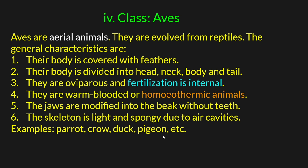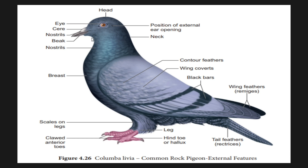An example of Aves is the pigeon, whose scientific name is Columba livia. The body is covered with feathers and it has claws. The external features of the pigeon represent the typical Aves body plan.